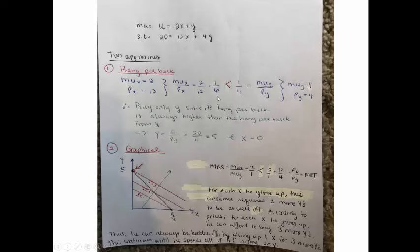In this example, this consumer always gets a bang-per-buck of 1/6 if that buck is spent on X and a higher bang-per-buck of 1/4 when that buck is spent on Y. Therefore, this consumer will only buy Y because its bang-per-buck is always going to be higher. Given that he has an income of $20, given that the price of Y is $4, that means he can afford to buy 5 Ys and no Xs. That's the answer. This consumer will choose 5 Ys and no Xs.